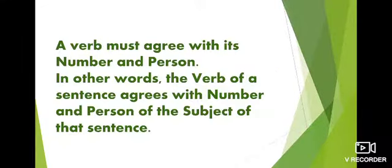A verb must agree with its number and person. In other words, the verb of a sentence agrees with the number and person of the subject of that sentence. In any sentence, the person or the number of the person — whether countable, uncountable, singular, or plural — our verb must agree with our subject.